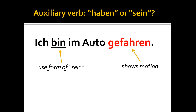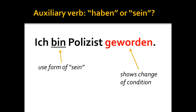Now, the question of when to use the auxiliary verb 'haben' and when to use 'sein': a general rule of thumb is if your verb or the participle shows motion — for instance, 'I drove in the car' indicates motion, moving from point A to point B — then use some form of 'sein' as the auxiliary verb: 'Ich bin...' Another rule of thumb is if the participle shows a change of condition: 'Ich bin Polizist geworden' — 'I became a police officer.' The 'geworden' shows a change of condition. The past participle of 'werden' is 'geworden,' so I use a form of 'sein' as the auxiliary verb: 'Ich bin Polizist geworden.'